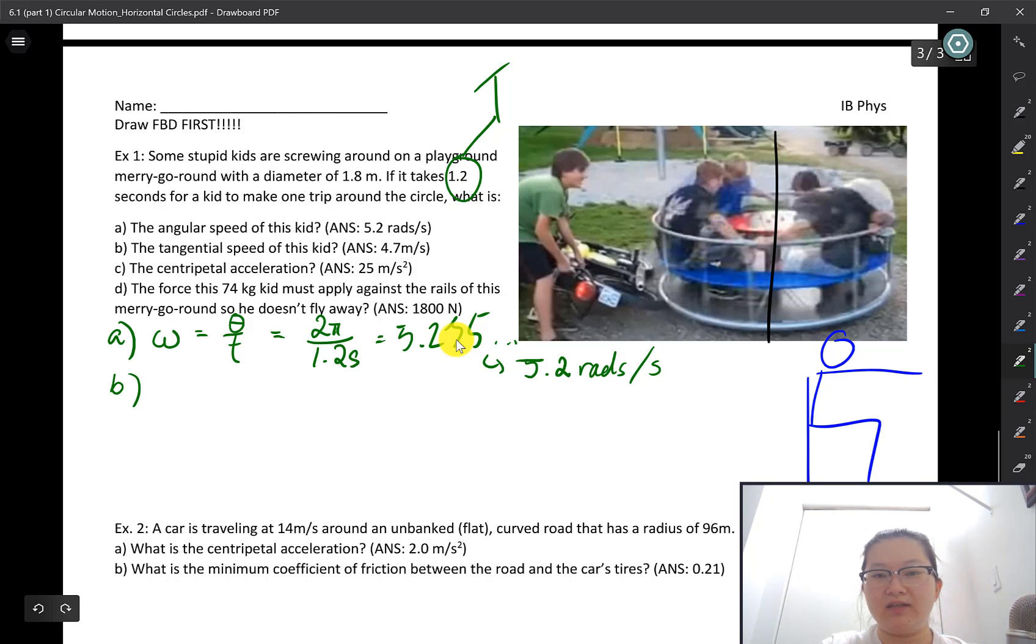Next up we have the tangential speed of this kid. When we talk about angular speed, imagine I have a pen that's rotating around in this circle. Every point along the arm of this pen has the same angular speed because it's covering the same radians per second. But if you take a look at my pen, notice the outer tip of my pen is going to be moving more, it covers more distance per unit of time compared to somewhere that's closer to the center of my pen. So that is the tangential speed.